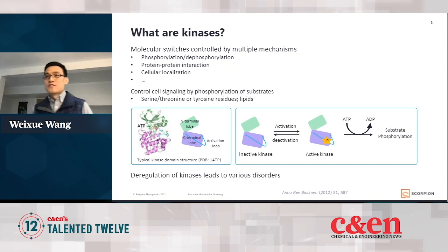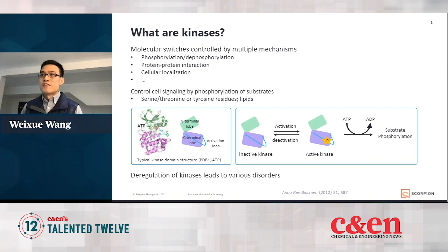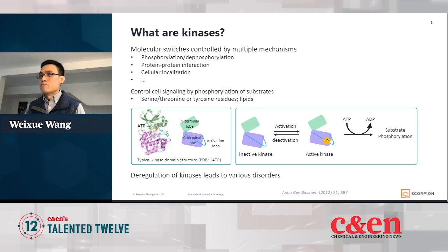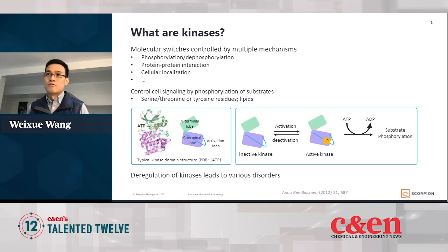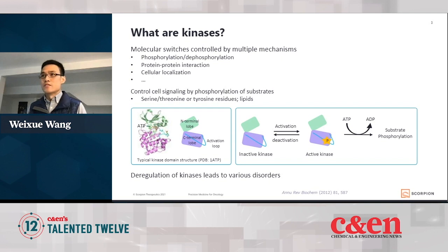So what are kinases? Professor Ben Haringer just talked about molecular switches, and kinases are actually a type of biological molecular switches. They can be turned on and off by mechanisms like phosphorylation, dephosphorylation, or protein-protein interactions, cell localizations. They control cell signaling by phosphorylation of the substrates, and deregulation of kinases leads to various diseases.